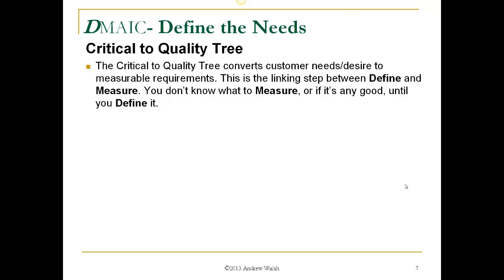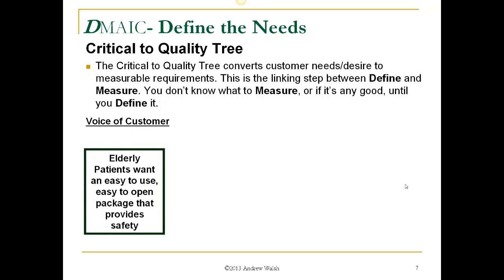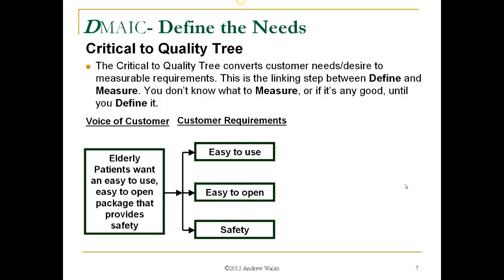Critical to Quality Tree. The Critical to Quality Tree converts customer needs and desires to measurable requirements. This is the linking step between defining and measuring — you don't know what to measure, or if it's any good, until you've defined it. For example, consider a blister-type product for elderly patients. Talking to the customer, elderly patients want an easy-to-use, easy-to-open package that provides safety for them. These can be converted directly into customer requirements: easy-to-use, easy-to-open, and safe product.